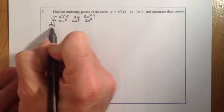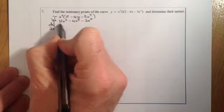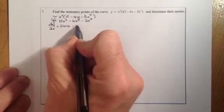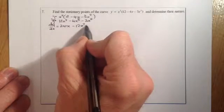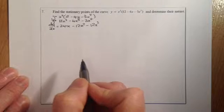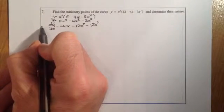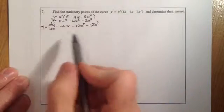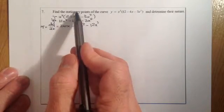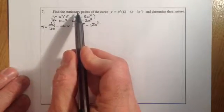I'll go ahead and differentiate. dy/dx is going to equal 24x minus 12x squared minus 12x cubed. That's the differentiated form, and remember that's your gradient formula. We know that dy/dx equals 0 at stationary points — the gradient is equal to 0 at stationary points.